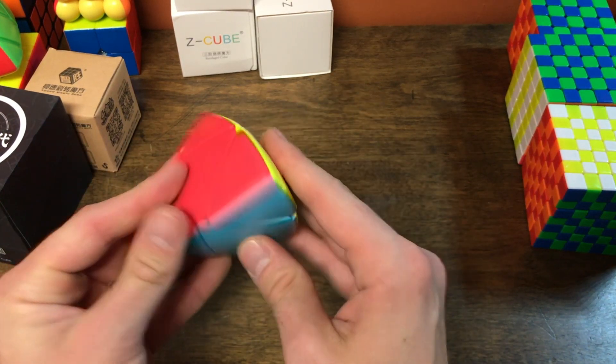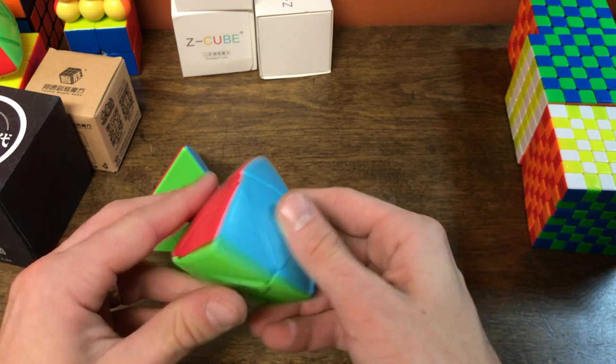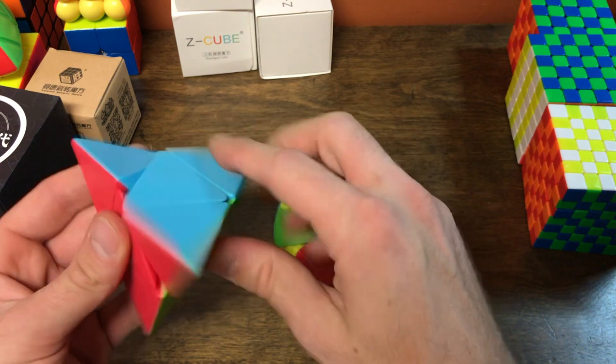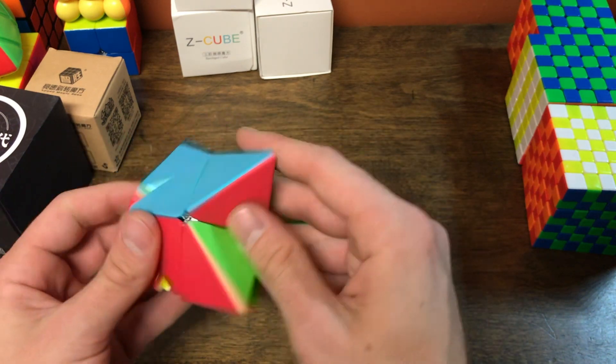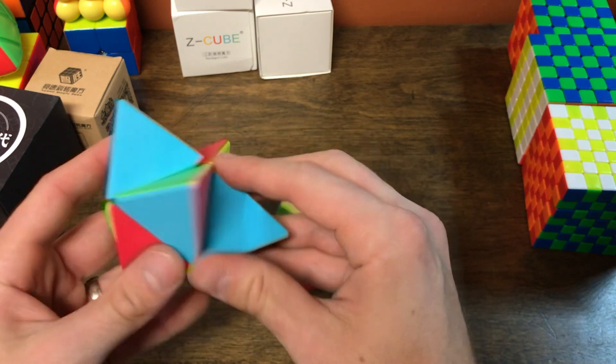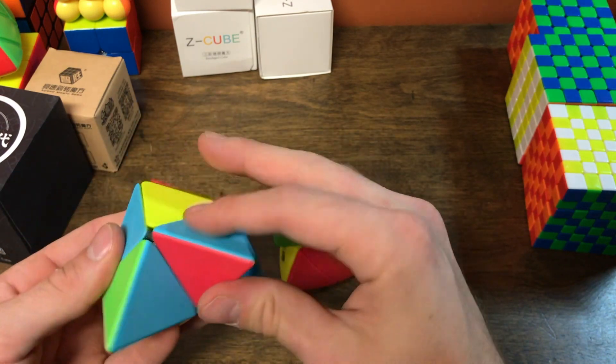They have the 3x3 and do they have 4x4? I don't remember. Turning feels a little bit faster on this one. I don't know if it has to do with anything about the shape or just maybe tensions.